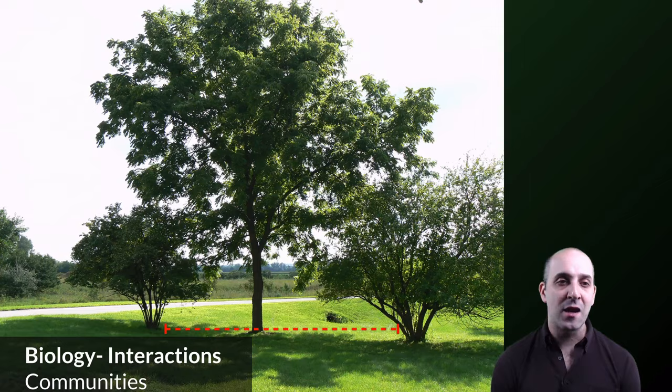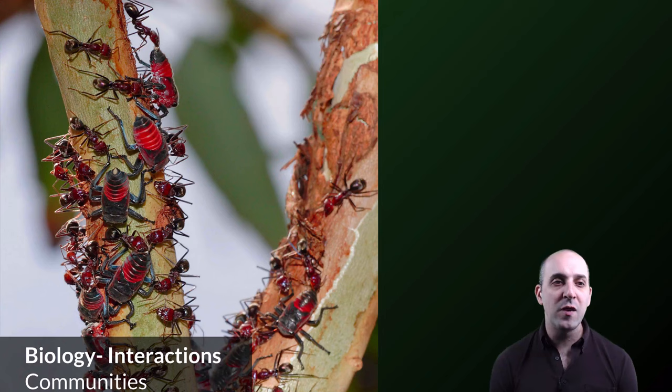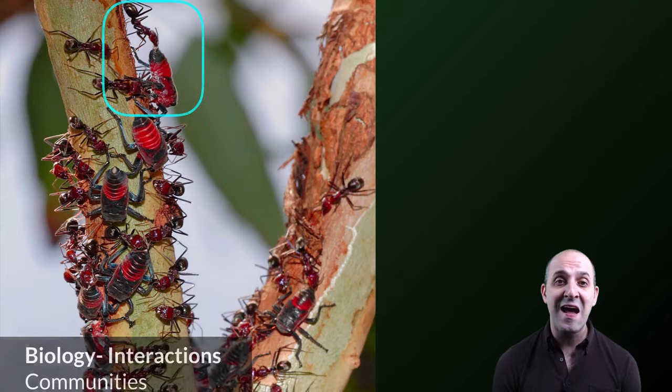Here, you might just see a bunch of insects, but if we get a little bit closer and zoom in a little bit, you can see a relationship between the ants and the other insects, wherein the ants are protecting the insects in exchange for access to nutrient-rich secretions that the insects produce. These are community interactions — the interactions among all of the populations in a particular ecosystem — and that's what we're going to be talking about in this video.